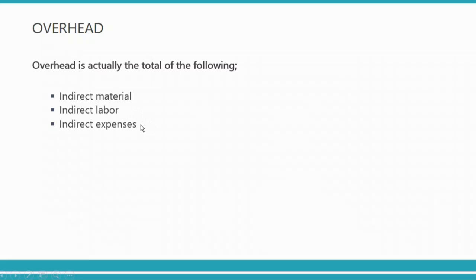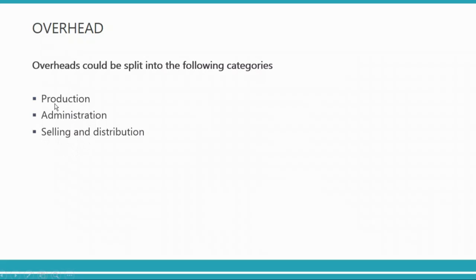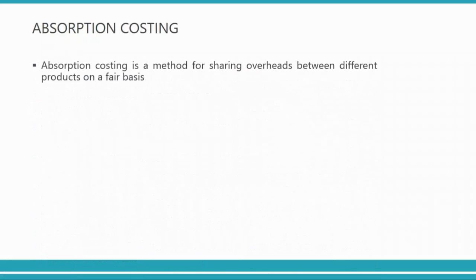Other indirect expenses could be utilities or anything else. Overheads can be split into the following categories: production overheads, administrative overheads, and selling and distribution overheads. The first is production and the next two are non-production overheads, because there are expenses within production departments and within other non-production departments which you are incurring but which are not directly related to the unit of product.